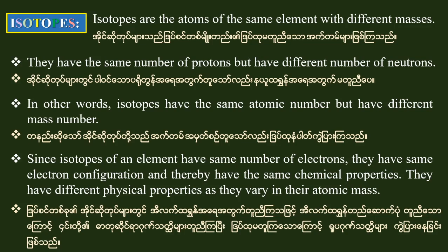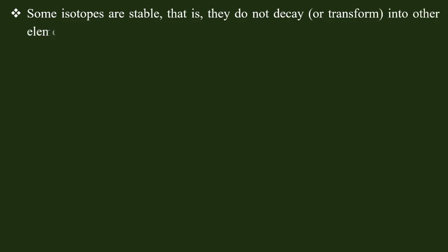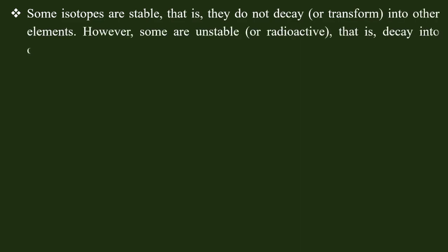Some isotopes are stable — that is, they do not decay or transform into other elements. However, some are unstable or radioactive — that is, they decay into other elements.